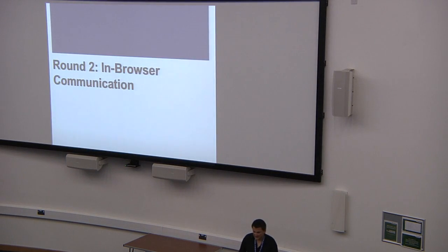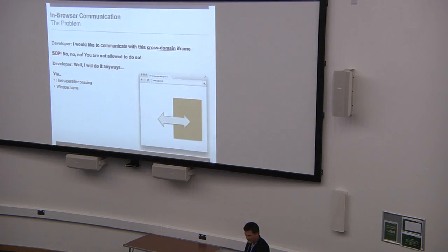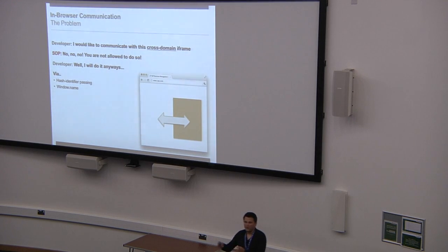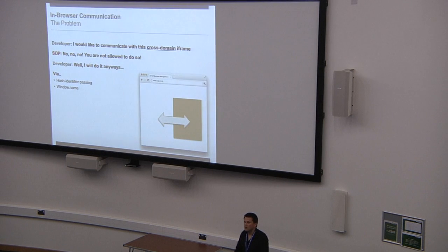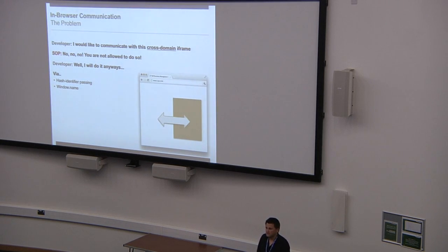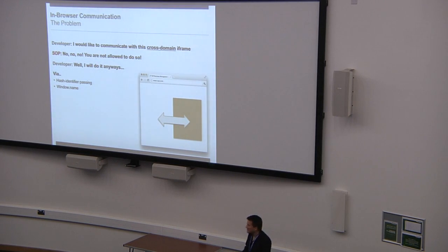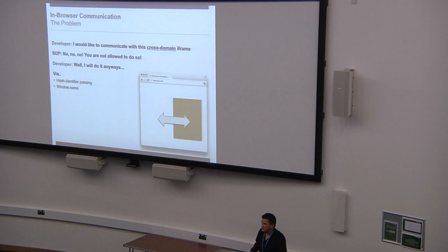Now the second round: in-browser communication. A developer says: I have a website that frames other websites, and I'd like to communicate with this frame — exchange data cross-domain. The same origin policy says no: cross-domain resource in the frame, access not allowed. Developers found two techniques to work around this: hash identifier parsing and the window.name property.